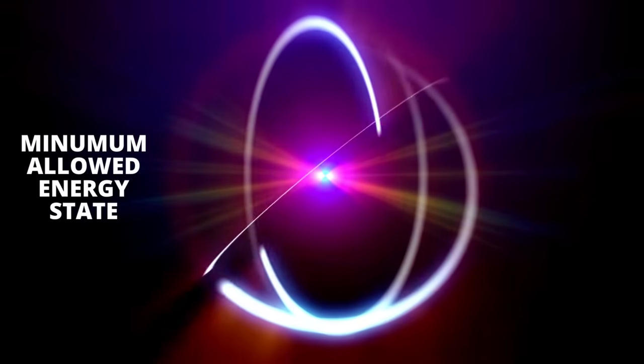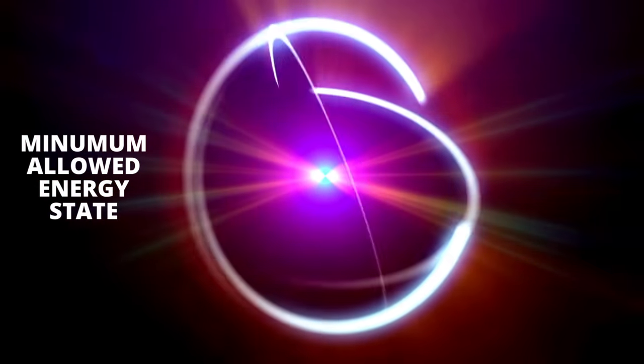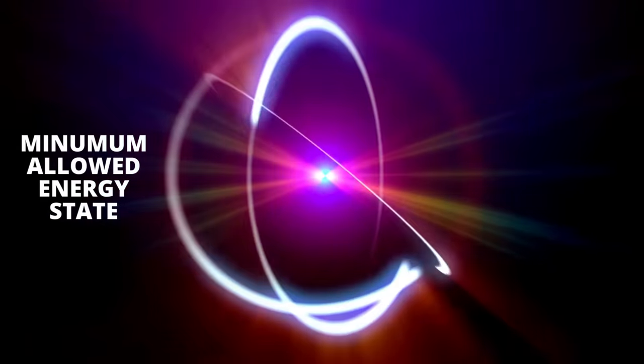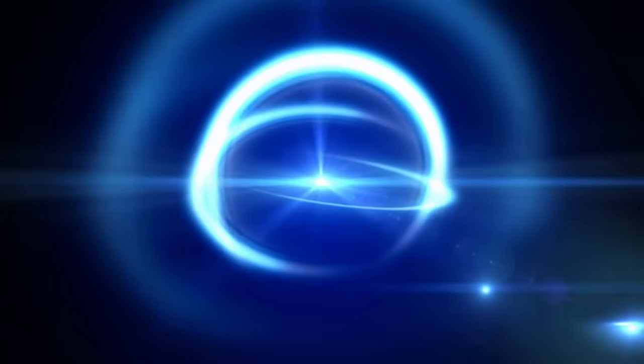So one might ask why the electrons don't radiate all their energy and collapse to the bottom of the well, to the nucleus. This is because there is a minimum allowed energy state. There are no more energy states below this minimum energy state.